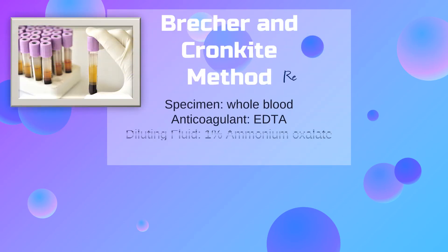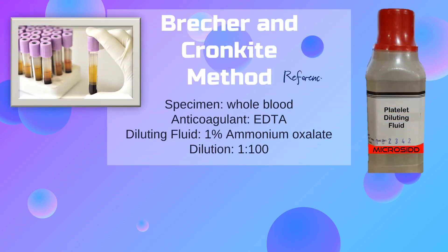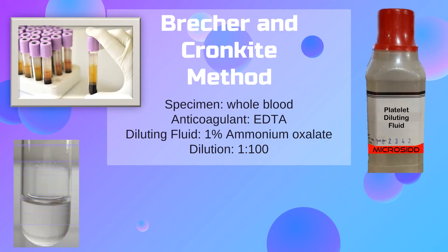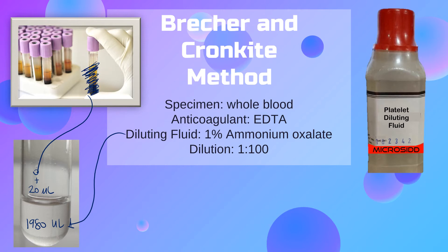The Brecker and Cronkite method is the reference method for platelet count. It uses whole blood in EDTA, with 1% ammonium oxalate as the diluting fluid, and requires a dilution of 1:100. To perform the dilution, add 1,980 microliters of diluting fluid into a test tube, then add 20 microliters of specimen. Remember to mix the specimen properly before adding it to the diluting fluid.